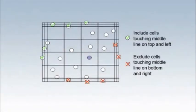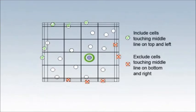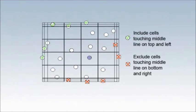First, count the number of viable cells seen as bright cells. Then, count the non-viable cells which are stained blue. Make a note of the number of large corner squares counted. Ideally, 50 to 100 cells should be counted. This increases the validity of the cell count.